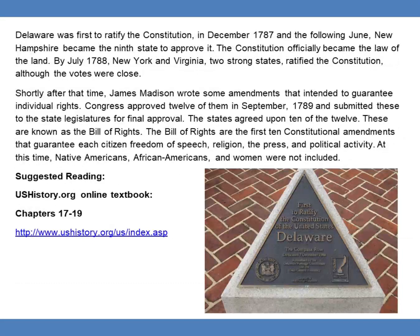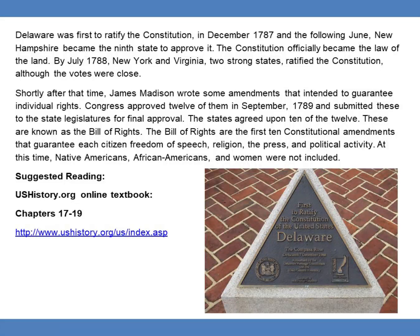Delaware was the first to ratify the constitution in December 1787, and the following June, New Hampshire became the ninth state to approve it. The constitution officially became the law of the land. By July 1788, New York and Virginia, two strong states, ratified the constitution, although the votes were close. Shortly after, James Madison wrote amendments intended to guarantee individual rights. Congress approved 12 of them in September 1789 and submitted them to the state legislatures for final approval. The states agreed upon 10 of the 12, known as the Bill of Rights — the first 10 constitutional amendments that guarantee each citizen freedom of speech, religion, the press, and political activity. At this time, Native Americans, African Americans, and women were not included.